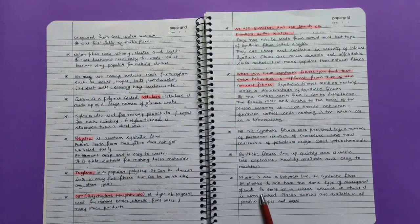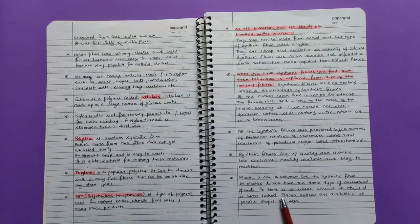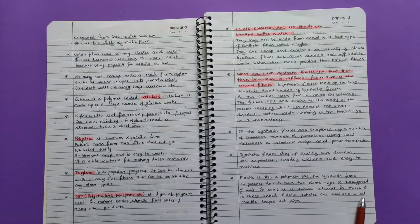All plastics do not have the same type of arrangement of units. In some, it is linear, whereas in others it is cross-linked. Plastic articles are available in all possible shapes and sizes.